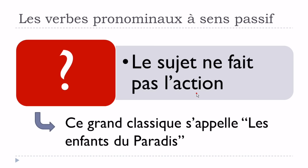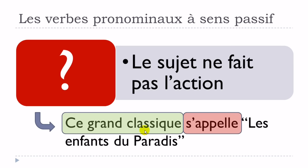I know it can be quite tricky, that's the reason why I want to give you an example here. Ce grand classique s'appelle Les enfants du paradis. So in that case, we want to talk about a movie, Les enfants du paradis — it's a classical movie, so Ce grand classique. You can see the verb, and before the verb you've got this S', so it is un verbe pronominal. And the subject, Ce grand classique, doesn't do the action, because it's not possible — the movie cannot call itself. And that's the whole concept of what we call le passif.